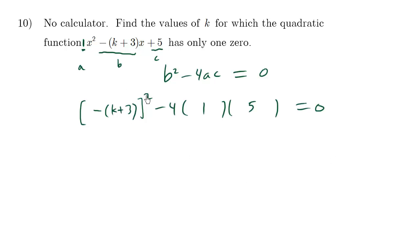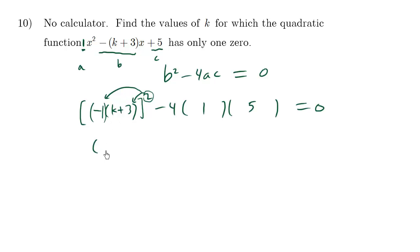Remember exponent laws — there's a hidden negative 1 here. That negative 1 is going to be squared, and so is k plus 3 squared. Negative 1 times negative 1 becomes positive 1, so the result is k plus 3 squared. Then negative 4 times 1 times 5 is 20, giving us k plus 3 squared minus 20 equals 0.